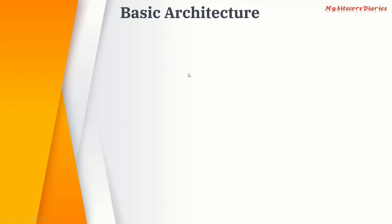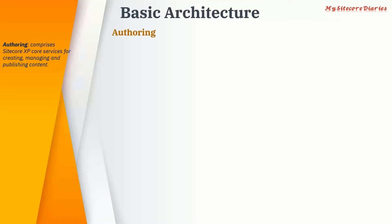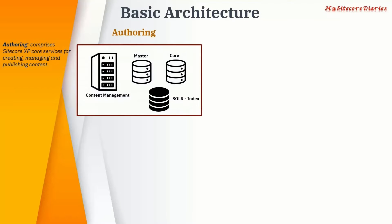Let's see basic Sitecore architecture. Authoring is basically a service which helps to create and manage published content. So in the authoring environment, these are the elements. Then we have a delivery environment, which is basically a live website which shows the user the live content, and it also exhibits the personalization tool.